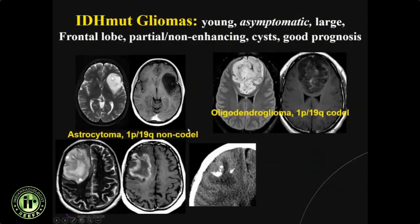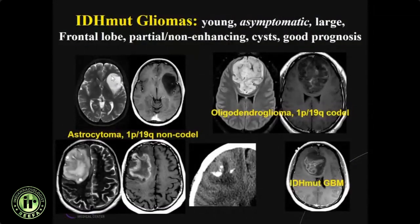Majority of IDH-mutated gliomas are lower grade — grade 2 or grade 3. However, there is a small percentage of higher-grade or grade 4 gliomas that are IDH mutated. We discussed that 5% of primary GBMs are going to be IDH mutated.